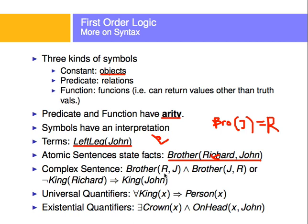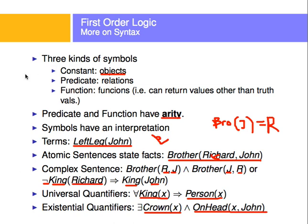There are more complex sentences. For example: R is the brother of J, AND J is the brother of R. Or: Richard is not a king, which implies that John is a king — because one of the two might be a king. We're also going to use universal quantifiers — for example, for all objects that are king, that implies that object is also a person. And there are existential quantifiers: there exists an object that is a crown, and that object x is on John's head.